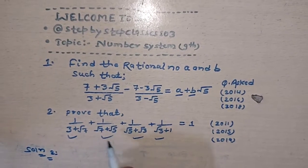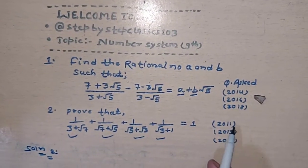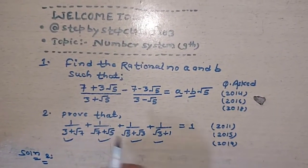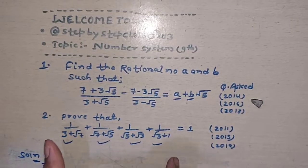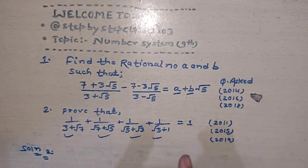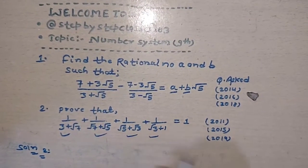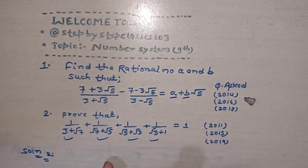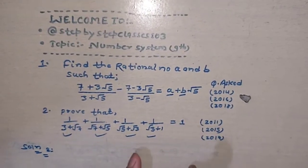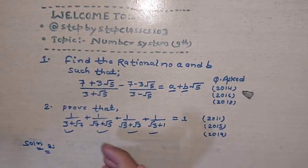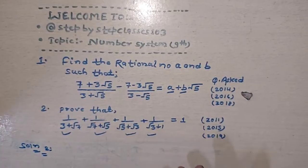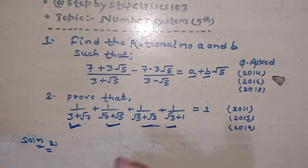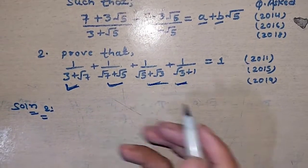We have to prove that the following value equals 1. This question has been asked in 2011, 2015, and 2019. If students think this will take a long time, don't panic — it is also solved by the rationalization method. I will tell you a trick method: how to solve it step by step. First of all, count that there are four terms, and one by one you have to rationalize each term.